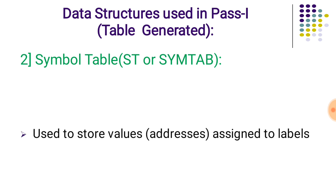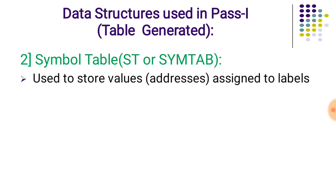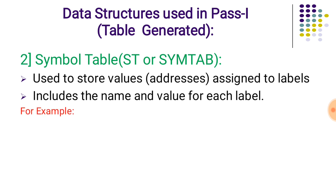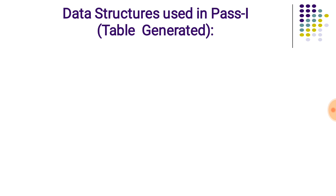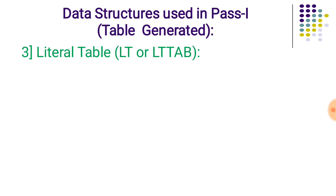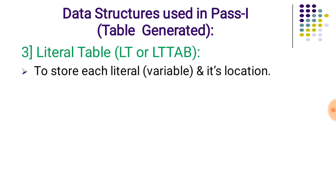The second data structure used in pass one is the symbol table. Symbols are nothing but labels — names for memory addresses. Each symbol table entry has two fields: label and address. For example, labels 'first' and 'alpha' are shown with their location counter values as 1003 and 1009.